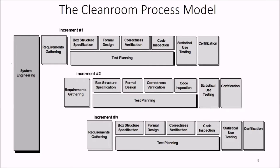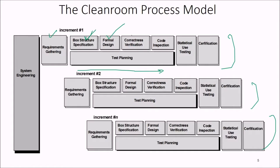In the clean room process model, we work through different increments. For each increment: we start with a box structure specification, then formally design it, verify for correctness, perform code inspection, and carry out test planning. We then apply statistical analysis and certify the increment.